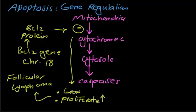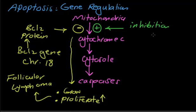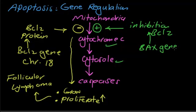The second issue: if you need apoptosis, what do you do? Since BCL2 protein inhibits apoptosis, you need to inhibit BCL2 protein or the BCL2 gene. Once the BCL2 gene is inhibited, the apoptosis pathway will proceed. How do you inhibit BCL2 protein? Through the BAX gene. The BAX gene is usually activated by TP53, which is the tumor suppressor gene.